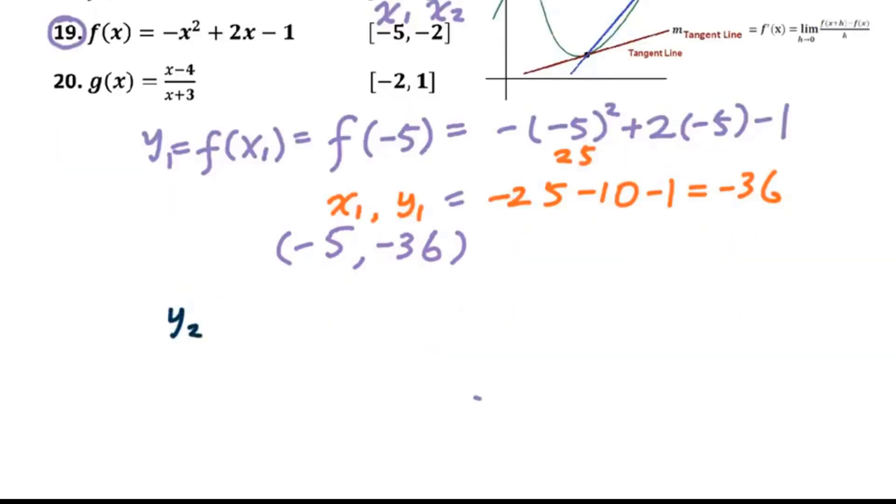For y2, we got f of x2, which means f of negative 2. So we got negative 2 squared plus 2 times negative 2 minus 1. We got negative 4 minus 4 minus 1.